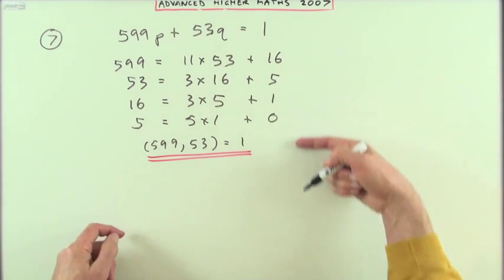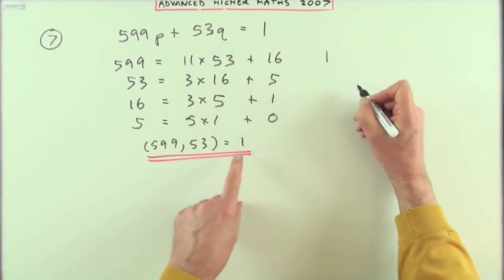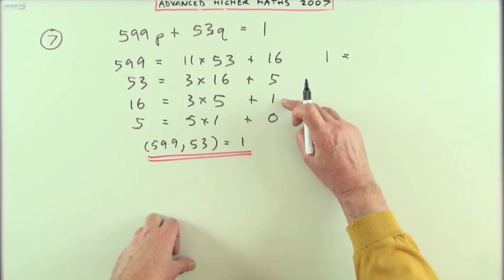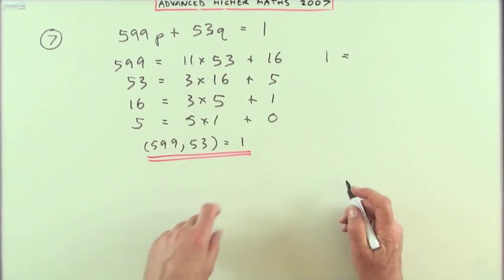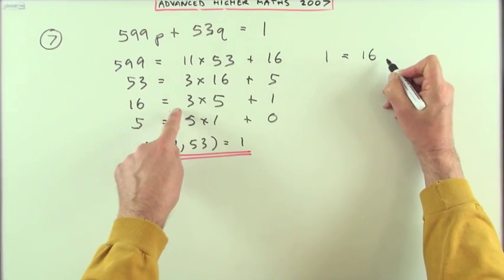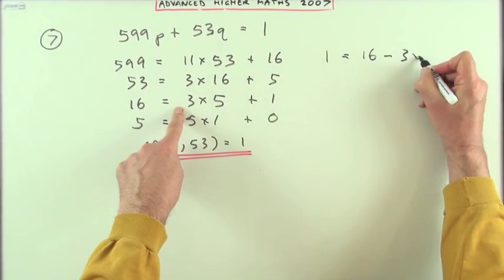Now retrace your steps here. So I'm going to start with my answer 1 and work backwards. So I'm going to have these three lines here. So 1 was equal to 16 take away 3 times 5.